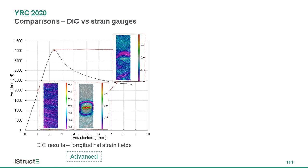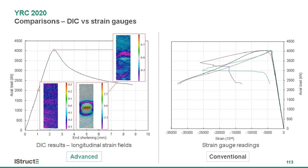Comparing with conventional strain gauge data for the same test, we can see clearly the drawbacks of conventional methods. With strain gauges, we can only know the strain at certain points on the specimen. Although we still see local buckling as the curves diverge, it is clearly less straightforward and less informative compared with the DIC results.